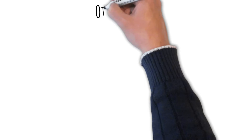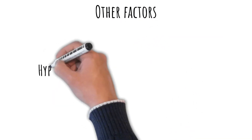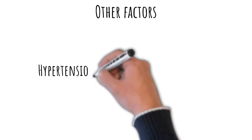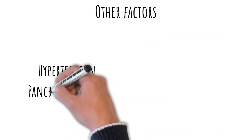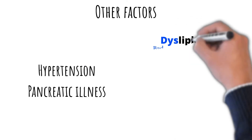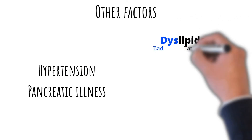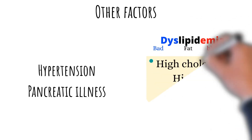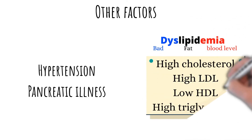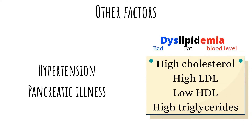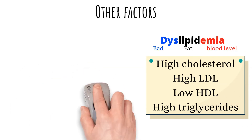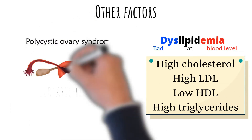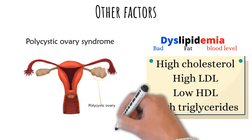Other factors that can trigger or worsen diabetes include illnesses such as hypertension, pancreatic illness, and dyslipidemia — a condition characterized by high levels of bad fat and low levels of good fat. Additionally, women with polycystic ovary syndrome are at higher risk as well.